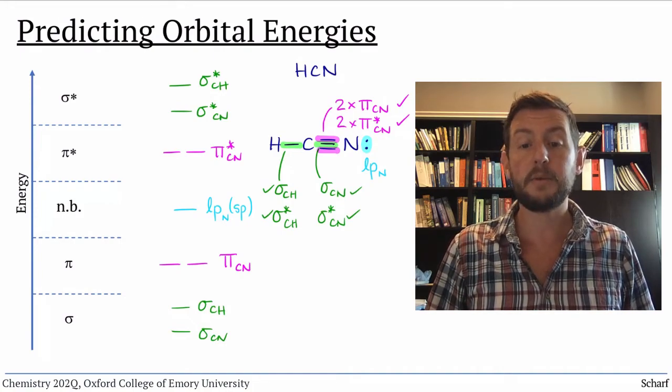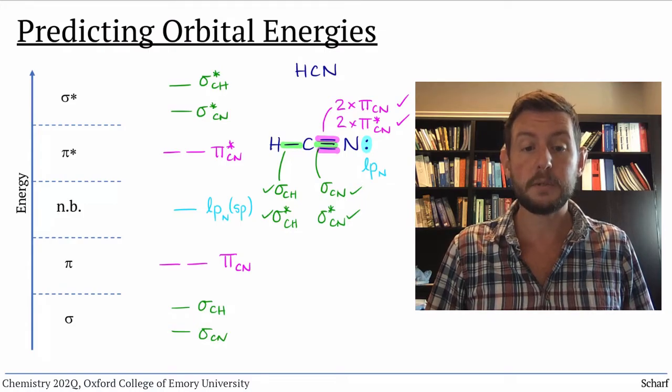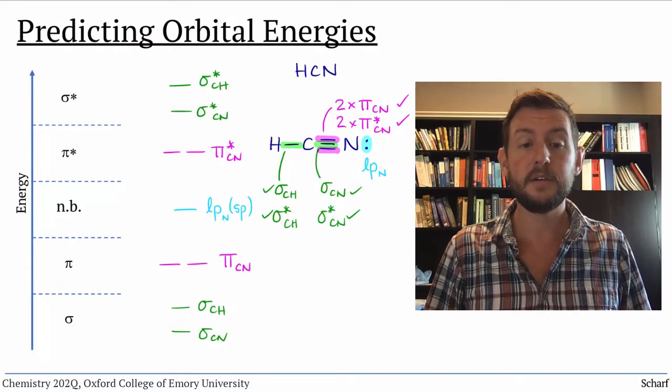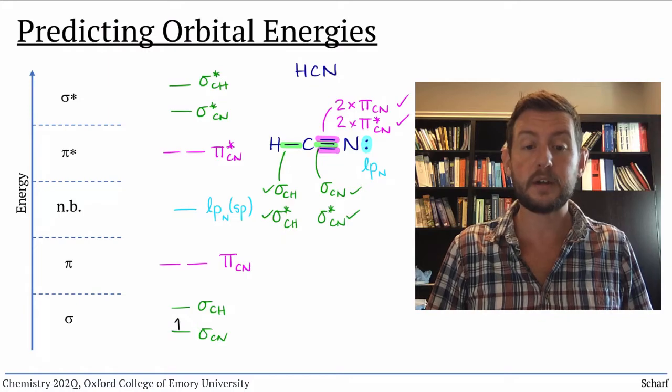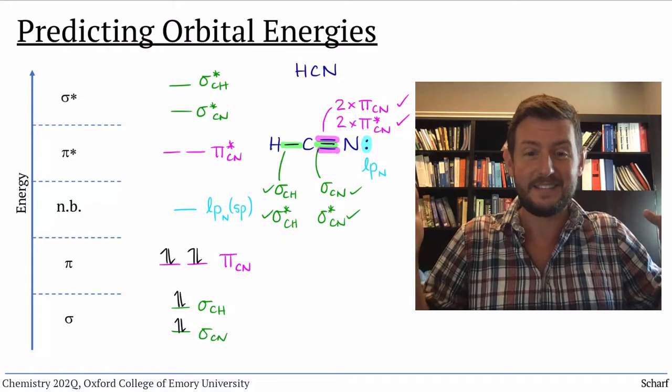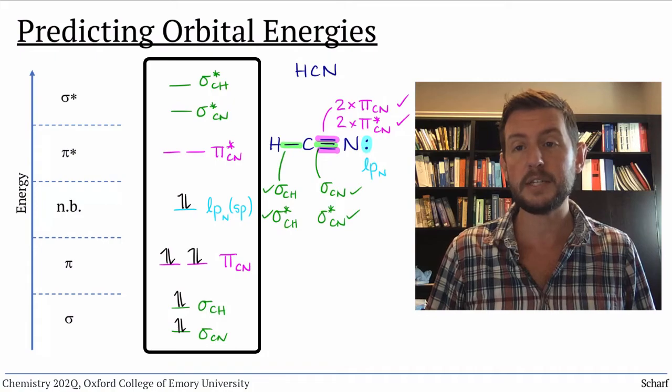We'll fill up the diagram with electrons: 1 plus 4 plus 5 for 10 total electrons. And voila! There we have it. The complete MO diagram of HCN.